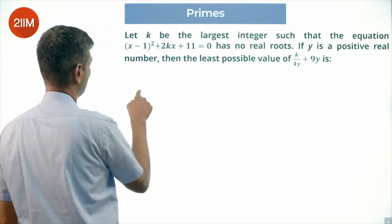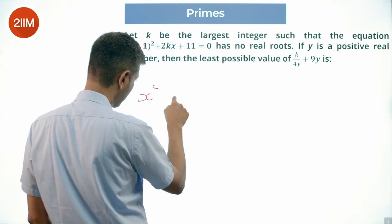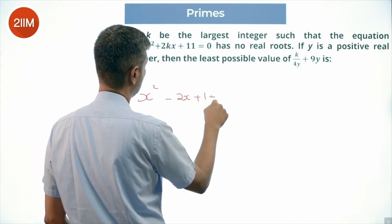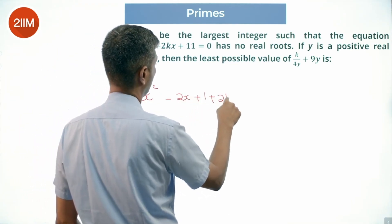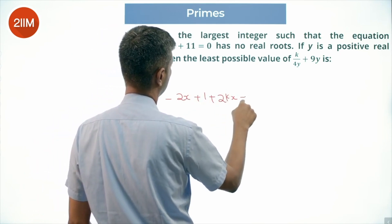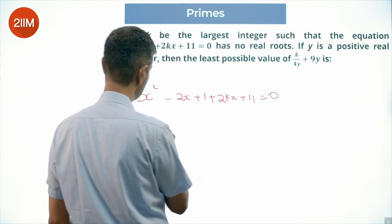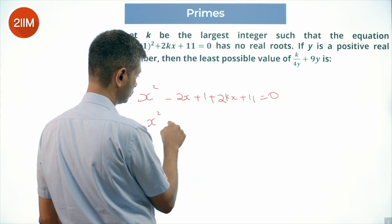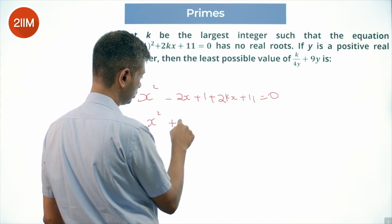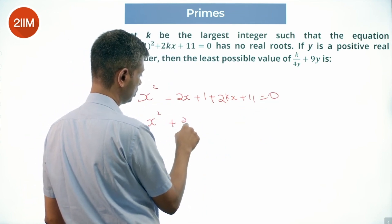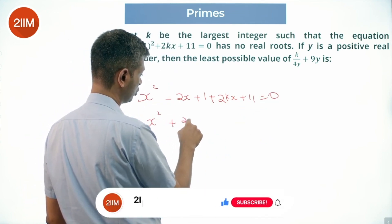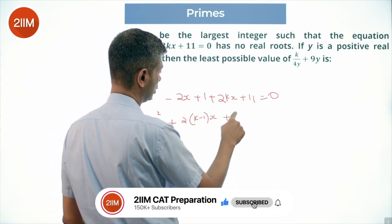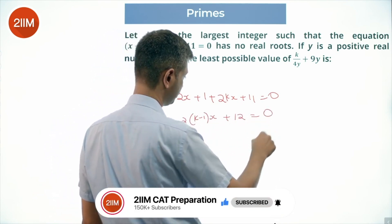Expand this. This becomes x squared minus 2x plus 1 plus 2kx plus 11 equal to 0, which is x squared plus 2 times (k minus 1) times x plus 12 equal to 0.